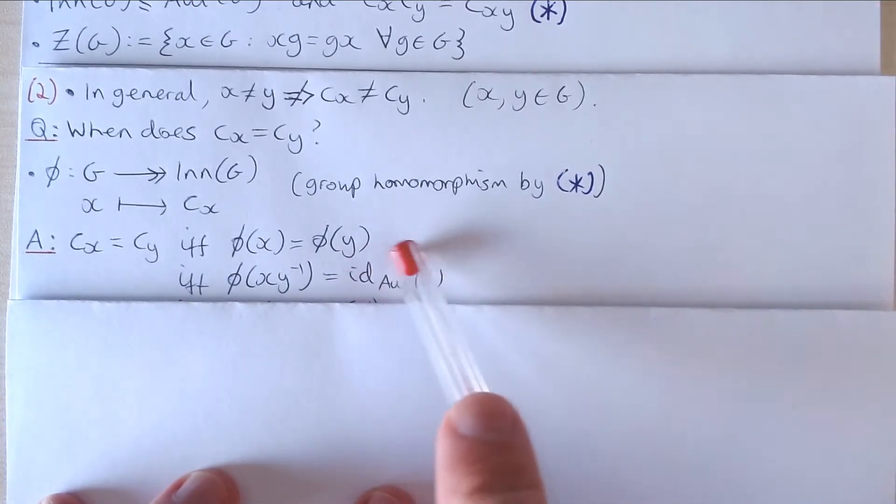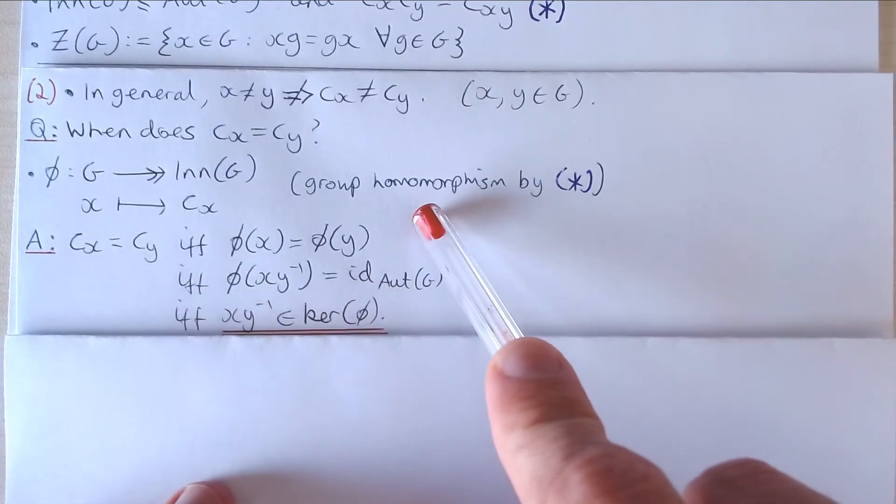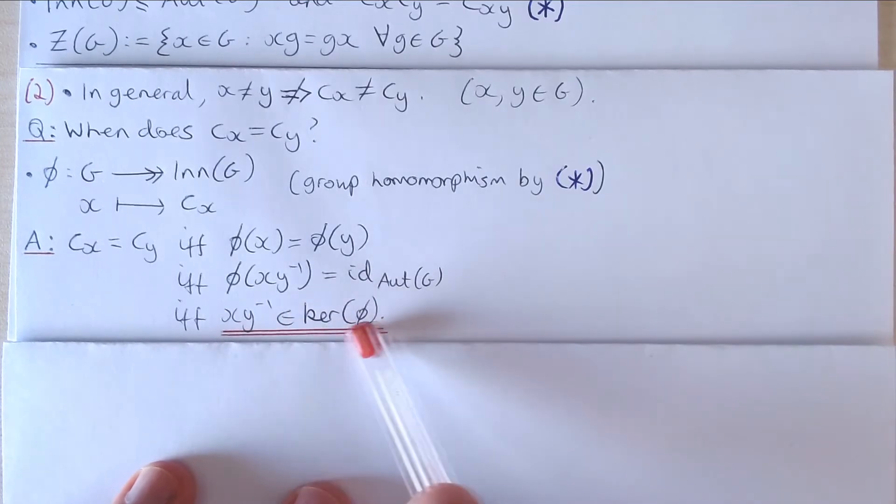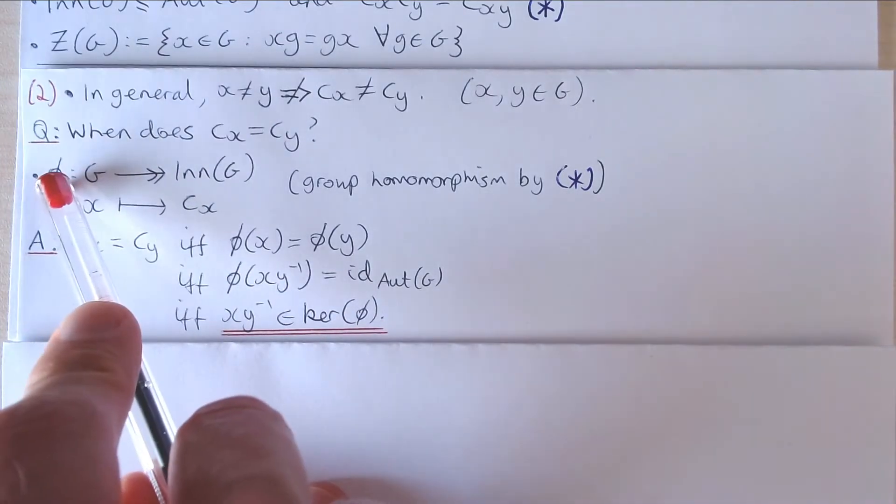This is just the identity map from G to itself, and this holds if and only if xy inverse is in the kernel of this homomorphism phi.